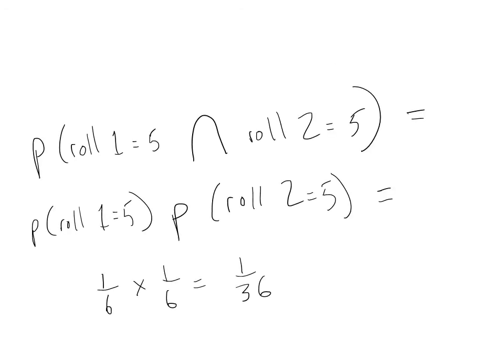The formula for calculating the probability of A and B when A and B are independent is the probability of A times the probability of B. So, using our example, the probability of rolling a five on both rolls is equal to 1/6 times 1/6, or 1 over 36.